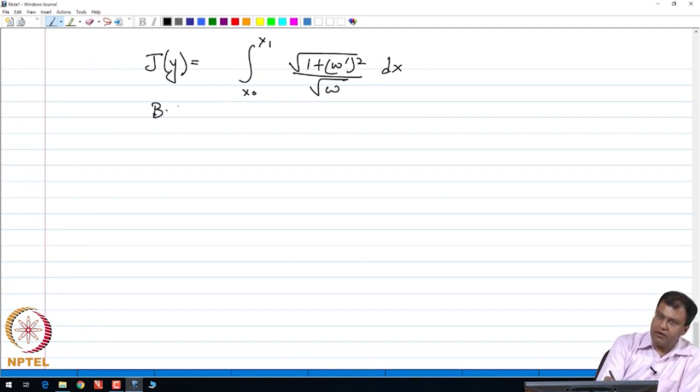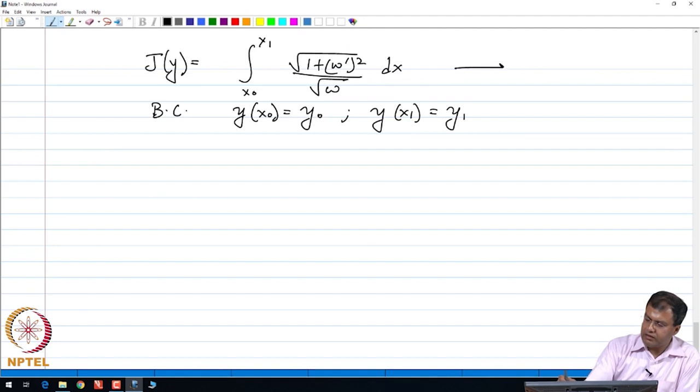This is the quantity that we are trying to minimize. Of course, we have the boundary conditions which are given by Y of X0 is Y0 and Y at X1 is Y1. Let me call this as 3 double prime. We see that 3 double prime, I am going to right away reveal the solution to this problem, although we are going to give a detailed step-by-step solution later on.